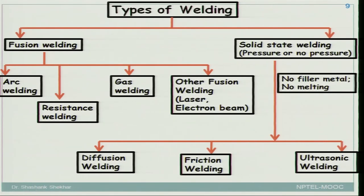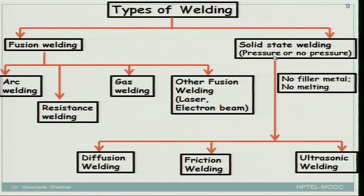Not all types of welding require solidification. There are two major classes: fusion welding and solid-state welding. Only fusion welding uses solidification, where actual melting takes place. In solid-state welding, no real melting occurs — joining may be achieved by pressure or even without pressure, as in diffusion welding. When discussing welding with respect to solidification, we will be limited to fusion welding.